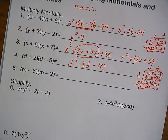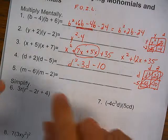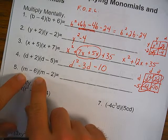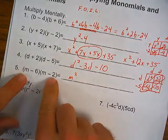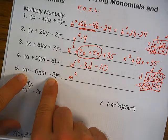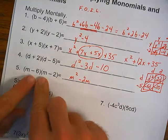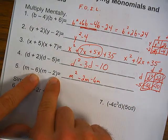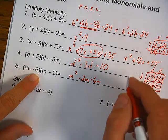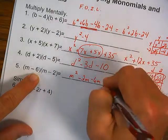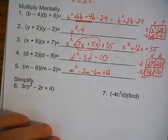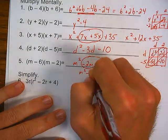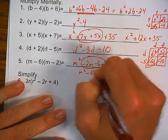The last one using FOIL. First: M squared. Outside: negative 2M. Inside: negative 6M. Last: negative times a negative is a positive — 6 times 2 is 12. Combine like terms: M squared, negative 2M minus 6M is negative 8M, plus 12.